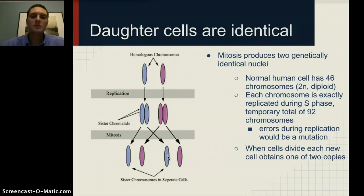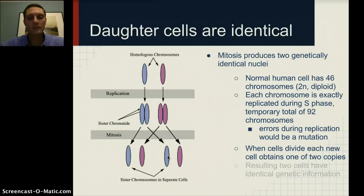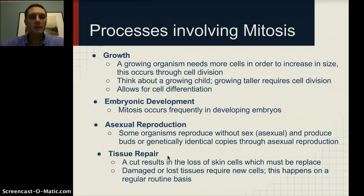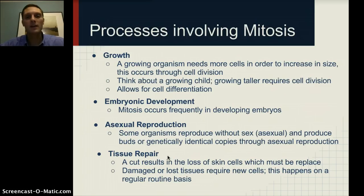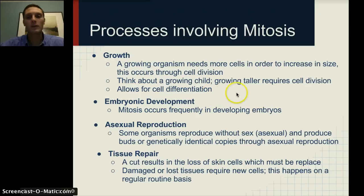When cells divide, each new cell obtains one of the two copies, so each new cell has the exact same DNA information and the resulting two cells have identical genetic information. There are several mechanisms involving mitosis. Growth, for example — an organism that's growing needs cells to divide. Think about a human baby developing in the womb: those cells are dividing, causing the organism to grow and increase in size. A child growing taller does so through cell division, and mitosis also allows for cell differentiation.